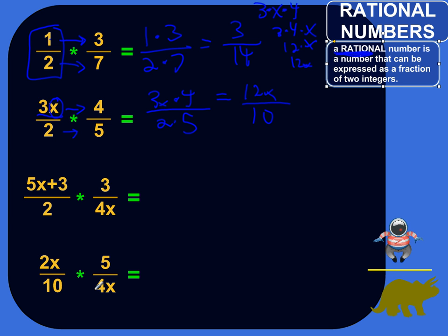And actually, we could have reduced this a little bit first. Here, we could pull a two out of there. We could pull a two out of there. So really, getting it in a little bit simpler form, we have 6x over five, which you can also write as six-fifths x. Same thing. All right. Making sense so far?